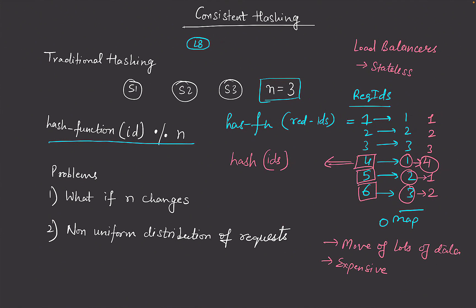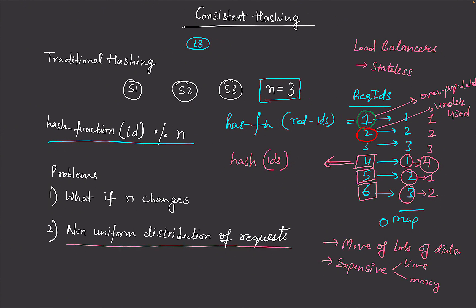The problem with the traditional approach is that if we add or remove a server, we have to move a lot of data, and moving data across servers is a very expensive and painful procedure. It may include downtime, or even if it doesn't, it must be handled very carefully and is expensive in terms of time and money. Another problem is that if many more people have a hash value of one and very few have a hash value of two, server one will be overpopulated and server two underused.